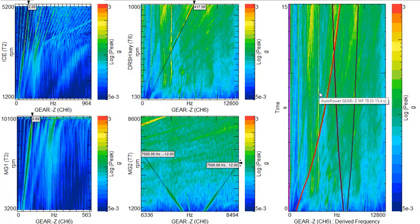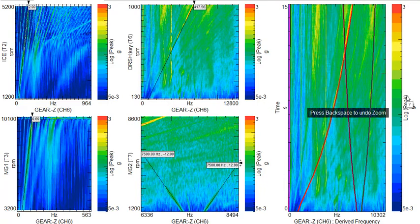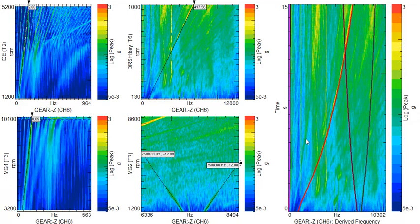So the benefit here is even though we have order content from lots of different uncorrelated sources, we can still drop in these order overlays and get a good understanding of what the major contributor for each of these orders is.